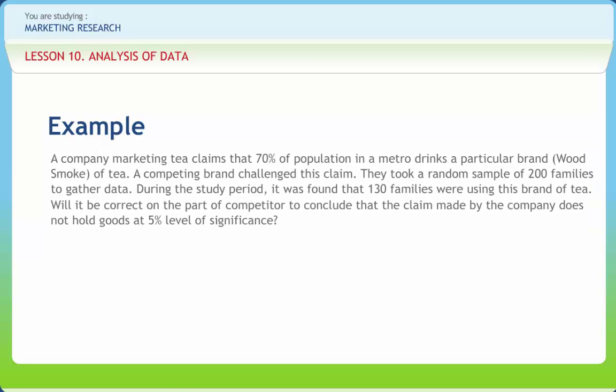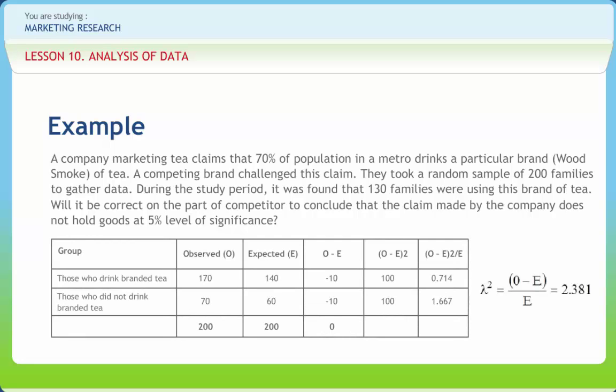A company marketing tea claims that 70% of the population in a metro drinks a particular brand of tea. A competing brand challenged this claim. They took a random sample of 200 families to gather data. During the study period, it was found that 130 families were using this brand of tea. Will it be correct to conclude that the claim made by the company does not hold good at 5% level of significance? Here, Hypothesis H0: People who drink this brand is not 70%.